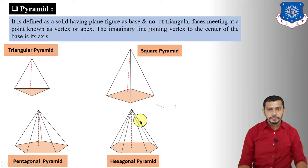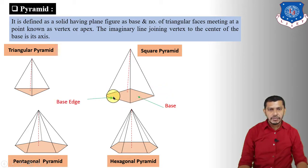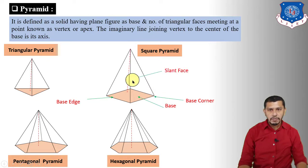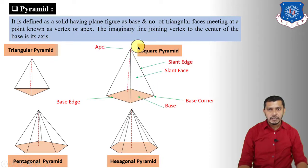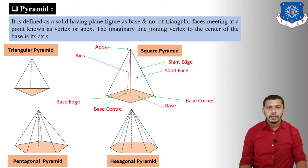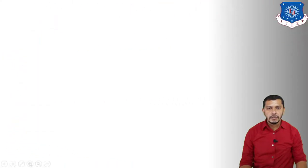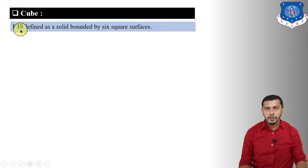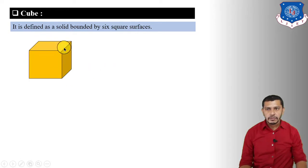The dimensional parameters of a pyramid include the base, base edge, base corner, slant face or triangular face, slant edge, apex point, and the axis — the imaginary line joining the apex point and the center of the base.